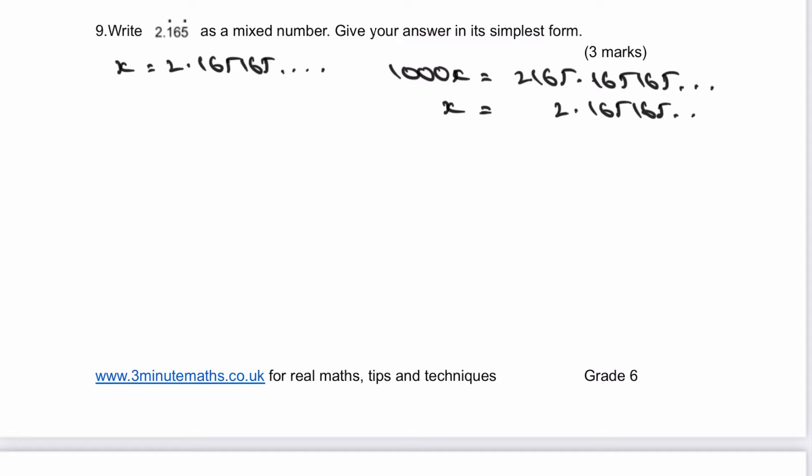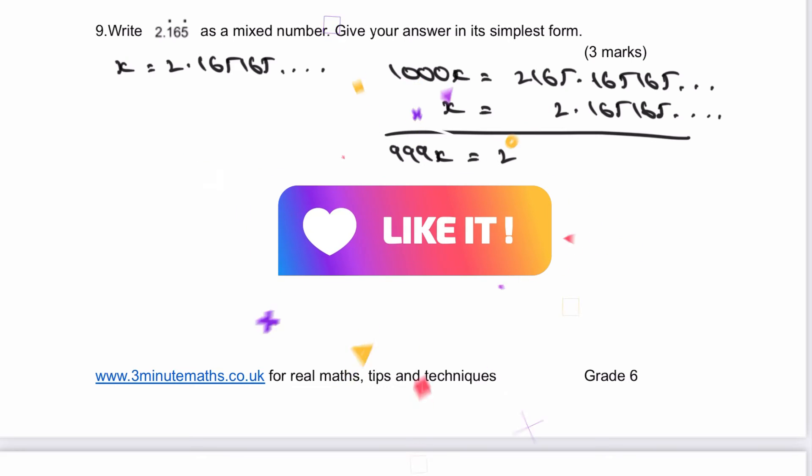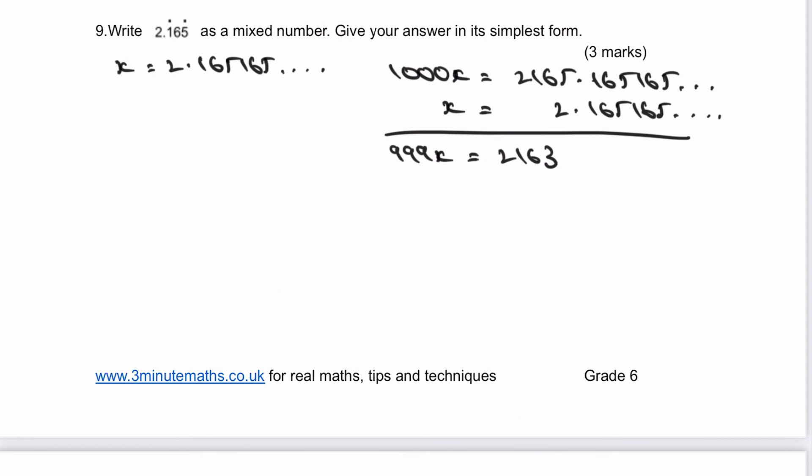Both of those go on forever. Okay, so therefore, when I subtract it, I'm going to get 999x equals 2,163. And then really, it's just a case of reducing this and getting the value of x as a fraction. So if I divide through by 999, I get x equals 2,163 divided by 999.